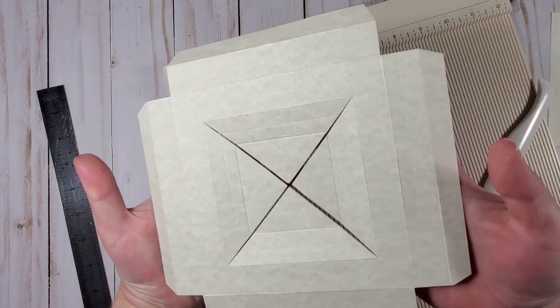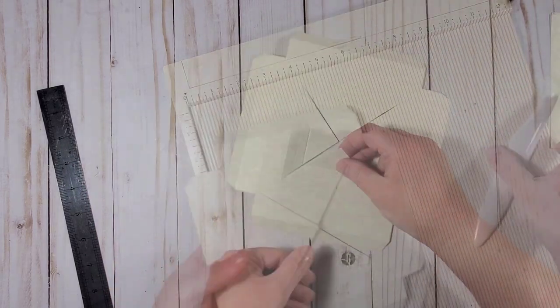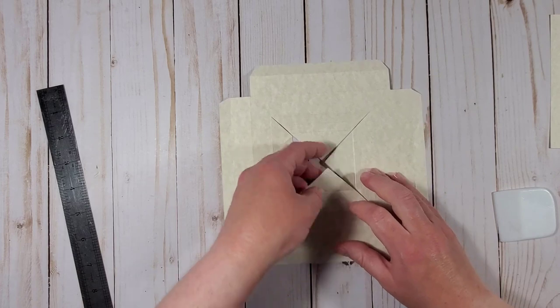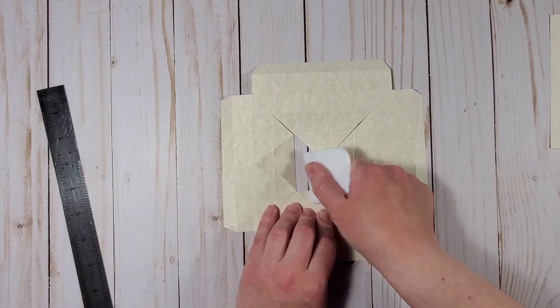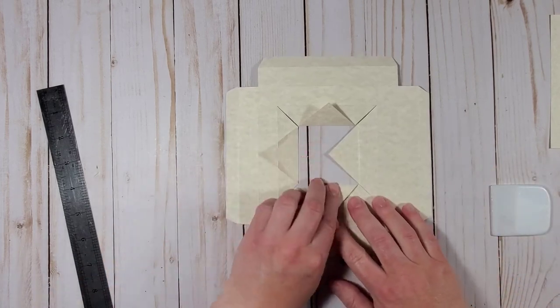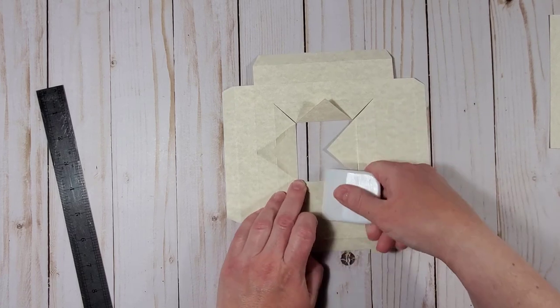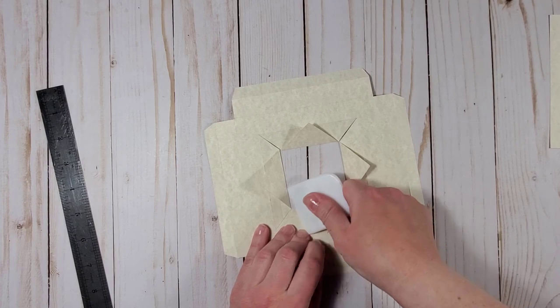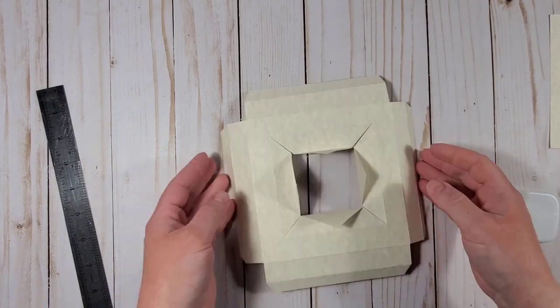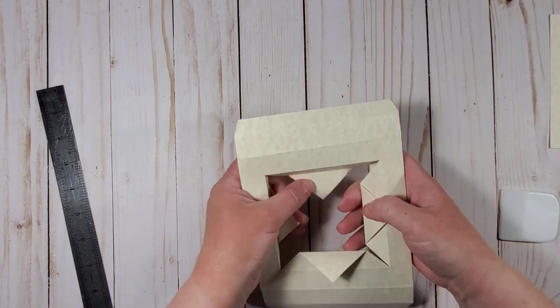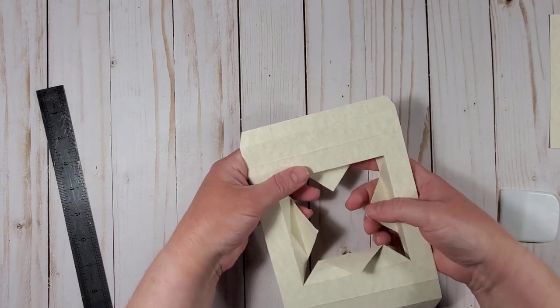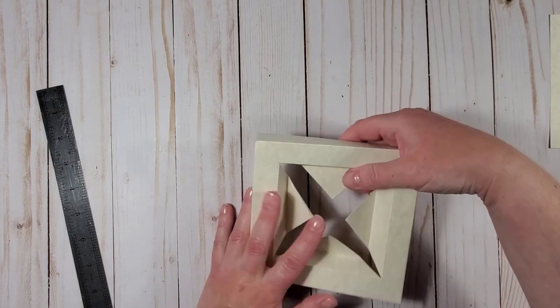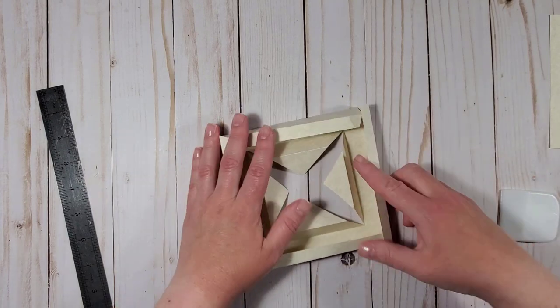Okay so let's have a look at what we have here. What's left to do is to fold the little triangular sections like so.